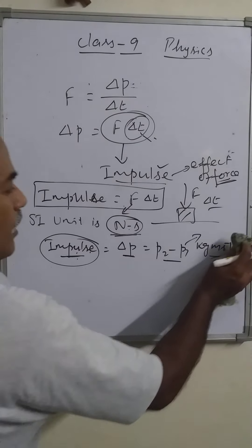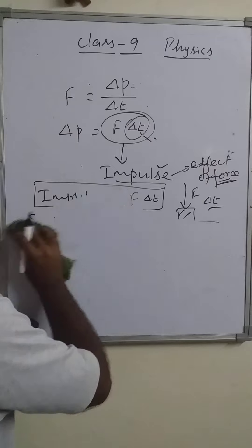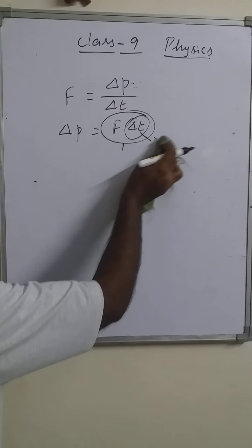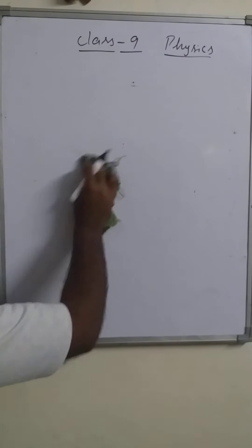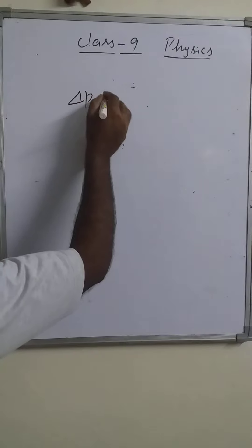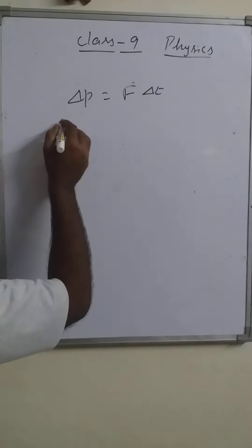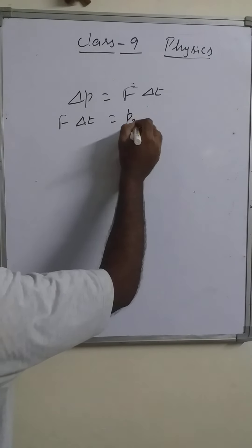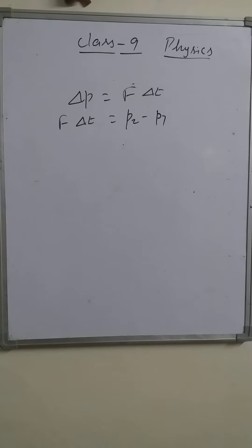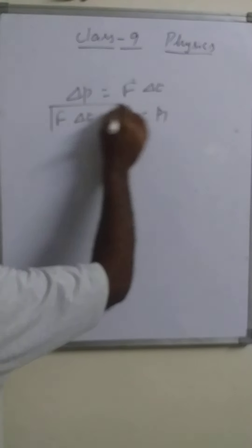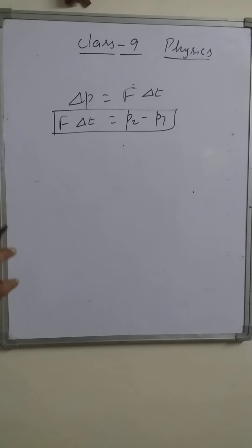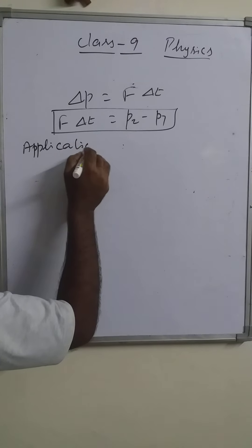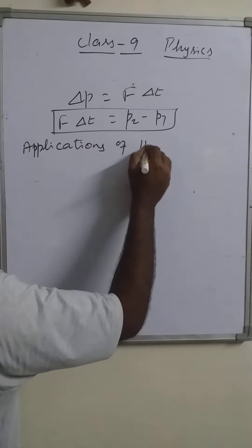This impulse is obtained from Newton's second law. From the relation ΔP equals F·Δt, or F·Δt equals final minus initial momentum — that is change in momentum — we can discuss the applications of Newton's second law of motion. There are many applications of Newton's second law.